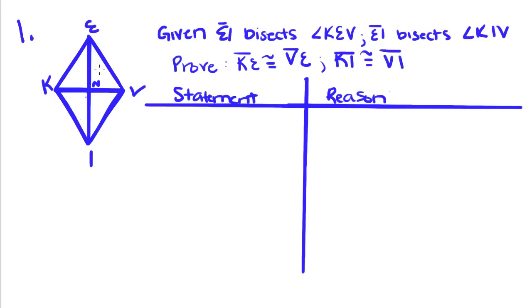Okay, so first we're going to write down our given. IE bisects angle KEV and angle KIV. And that's given.